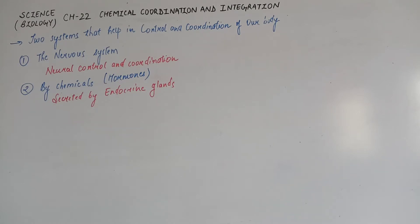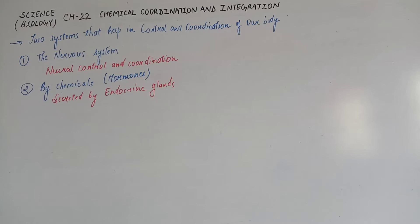Nervous system में आते हैं neural control and coordination — means central nervous system, reflex action, reflex arc, sensory receptors, sense organs जैसे eyes, ears आदि — यह सारा nervous system में आते हैं।